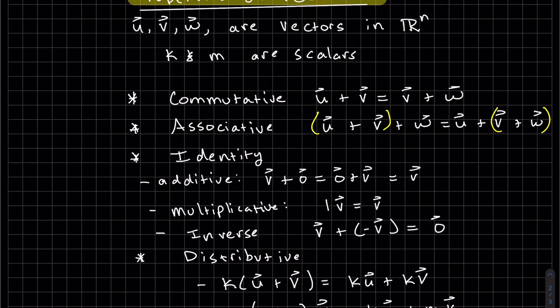Okay, so these are properties. And just U, V, W, are three vectors in Rn. Again, this could be in R2, X and Y axes. R3, XYZ axes. Or it can be all the way up to Rn. K and M are scalars.